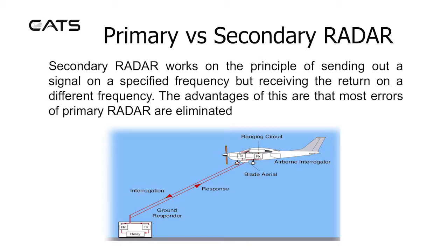Primary versus secondary radar. Secondary radar works on the principle of sending out a signal on a specified frequency but receiving the return on a different frequency. The advantage of this is that most errors of primary radar are eliminated.